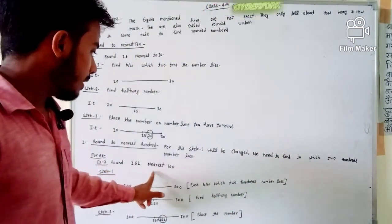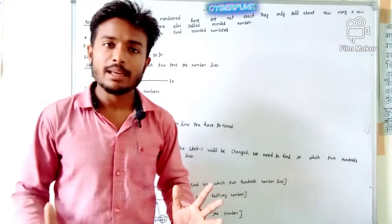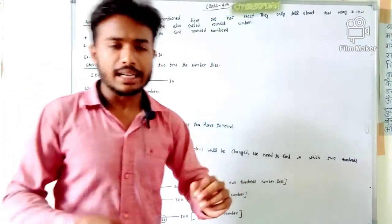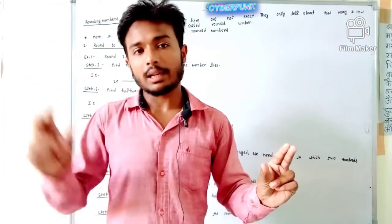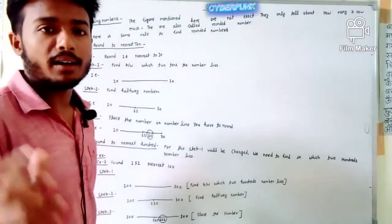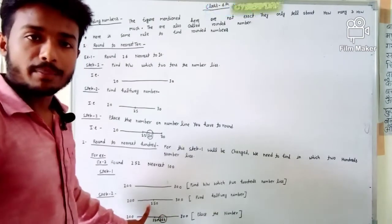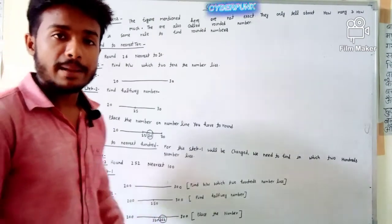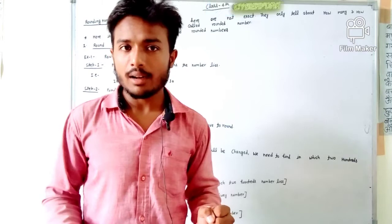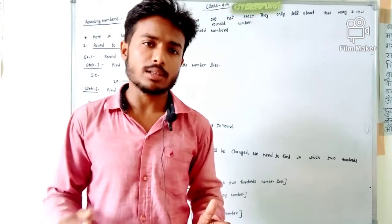Let's take an example: Round 252 to nearest 100. We will find 252 lies between 200 and 300. So 252 lies between 200 and 300. Second step is to find the halfway point. What is halfway between 200 and 300? It is 250.